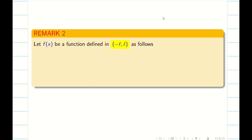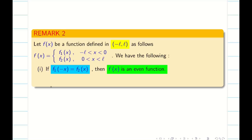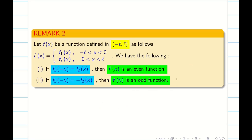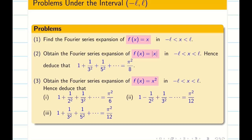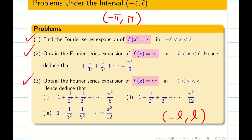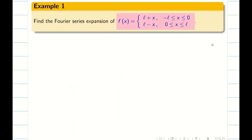Next remark: if the function is of the form f1 and f2, and if f1 of minus x equals f2 of x, then it is an even function; if f1 of minus x equals minus f2 of x, then it is an odd function. Now let us do some problems under minus L to L. The problems we did for minus pi to pi can be tried by yourself with the limit changed. I am going for new problems with a split-up function.